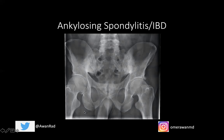A classic manifestation is bilateral sacroiliitis. Along the sacroiliac joints, you can see sclerosis on both sides of the joint — a fairly symmetric process. There are lucencies reflecting erosions and loss of bone along the sacroiliac joints. These joints are inflamed in a bilateral symmetric pattern — a very telling finding in ankylosing spondylitis and IBD.